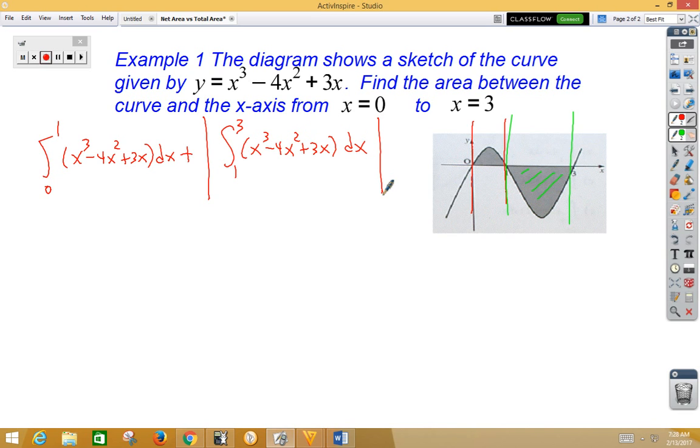Now if we go ahead and integrate, we get x to the 4th over 4 minus 4x cubed over 3 plus 3x squared over 2 from 0 to 1. If we plug in the 1, we would get 1 fourth minus 4 thirds plus 3 halves minus 0. If we make a common denominator and add this up, that would give us 5 twelfths for the smaller area.